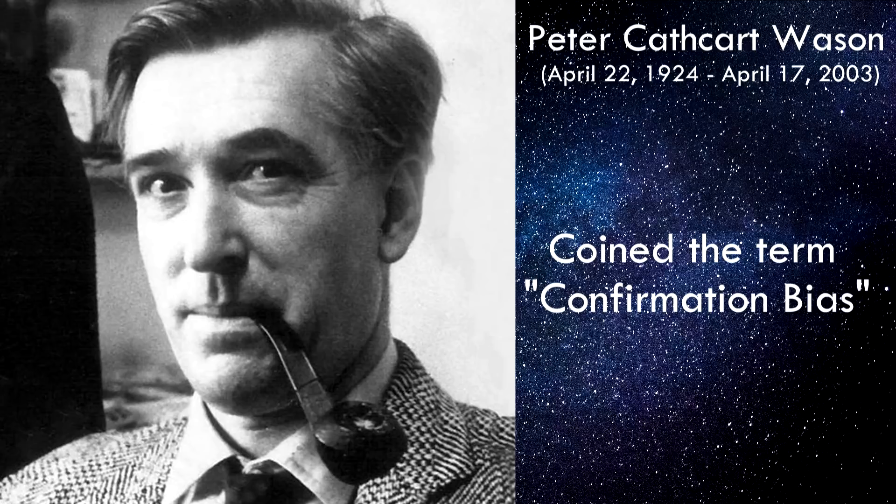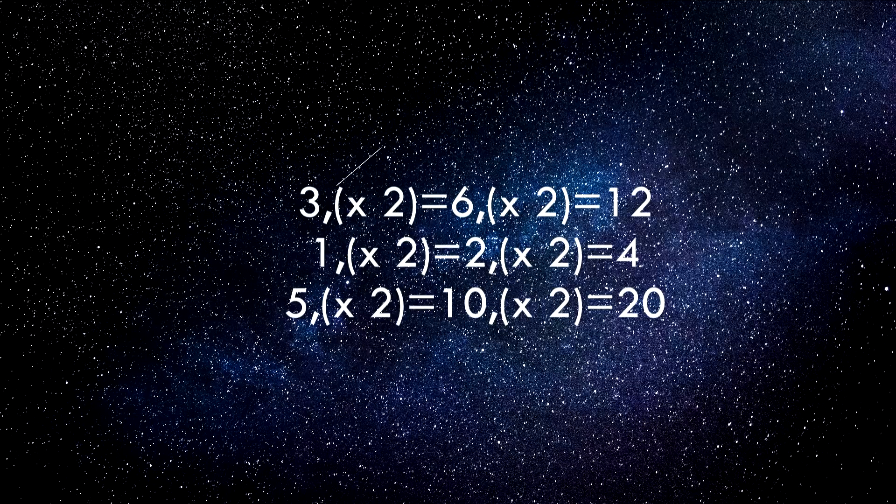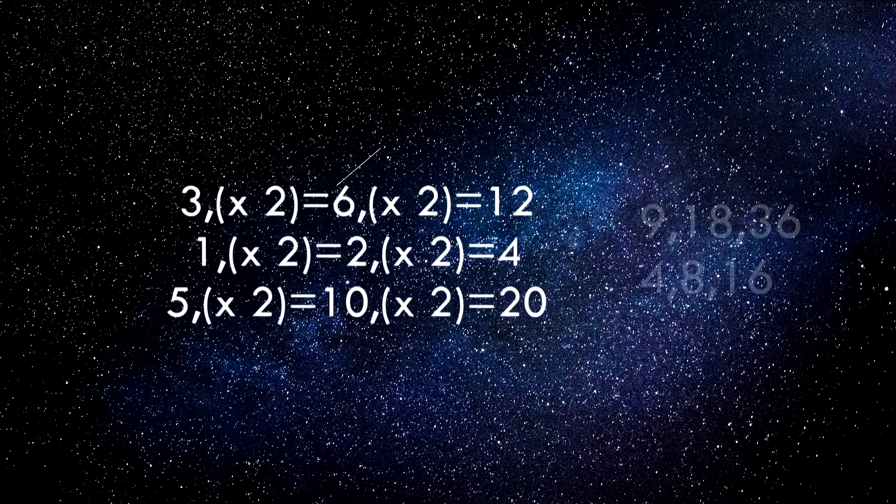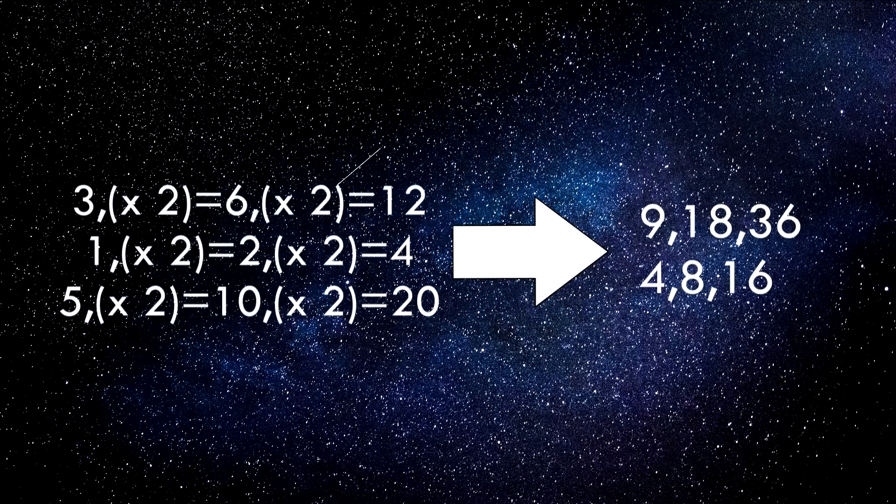Instead, they will continue to believe that the rule is simply a doubling, and will only search for information that confirms what they previously believed, rather than trying to find the truth. No wonder Peter Wasson named this failing of human thought the confirmation bias.